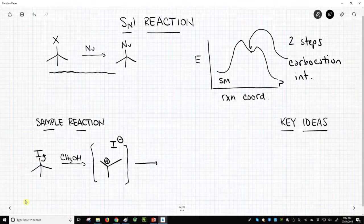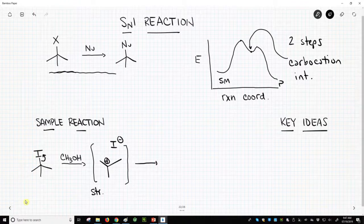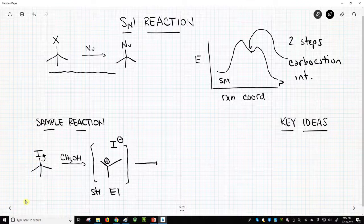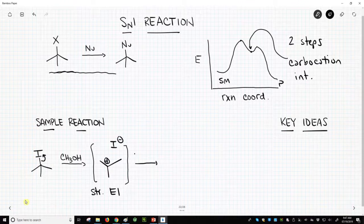So carbocations are strongly electron poor. I mean, they have a positive formal charge. They're very electron poor. So this is a strong electrophile. This is wanting to be attacked by something that has electron density. And as it turns out, in this reaction, we have something that has electron density.